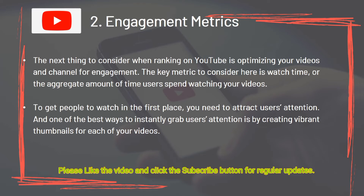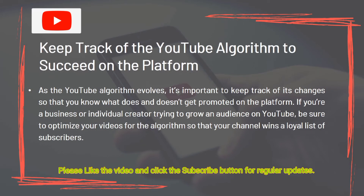For engagement metrics, the key metric to consider is watch time — the aggregate amount of time users spend watching your videos. To get people to watch in the first place, you need to attract their attention, and one of the best ways to instantly grab users' attention is by creating vibrant thumbnails. As the YouTube algorithm evolves, keep track of its changes so you know what does and doesn't get promoted. If you're trying to grow an audience on YouTube, optimize your videos for the algorithm so your channel wins a loyal list of subscribers.